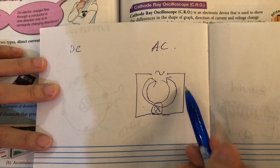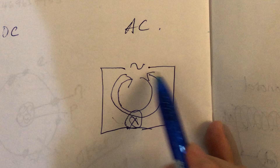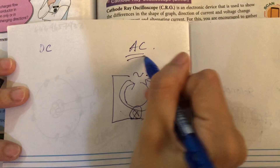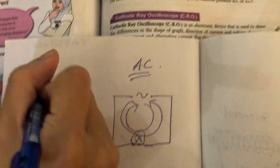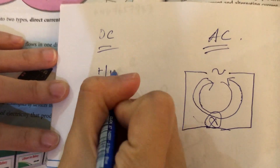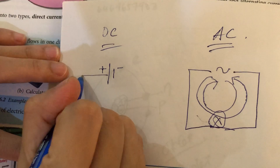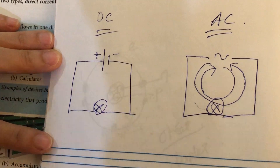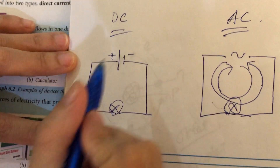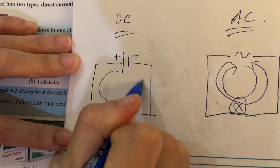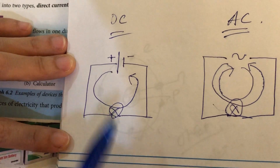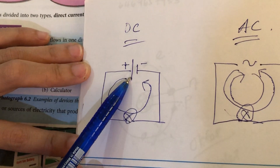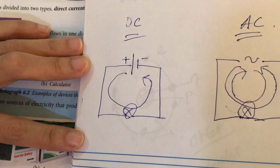You see that the current flows like this — clockwise, anticlockwise, clockwise, anticlockwise. That is alternating current. Direct current is like a battery: you have a positive terminal and a negative terminal connected to an electrical device, and the direction of electric current is always the same — only one direction, from the positive terminal to the negative terminal.